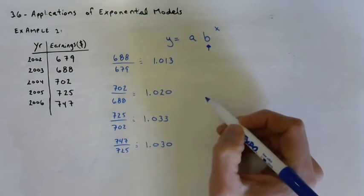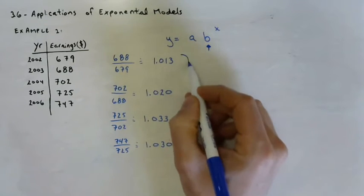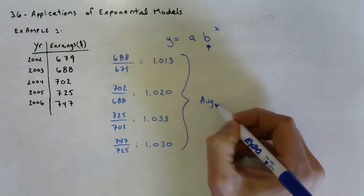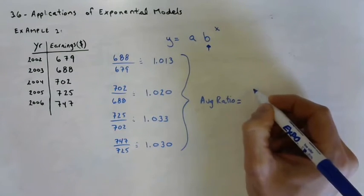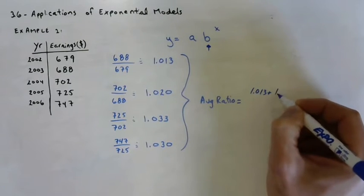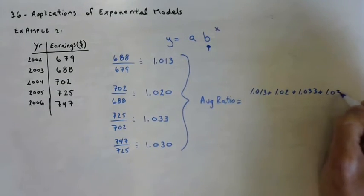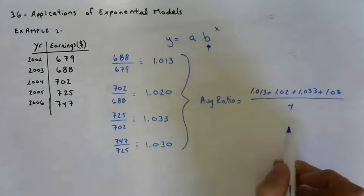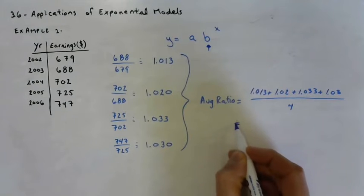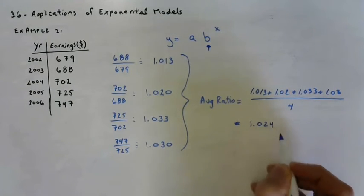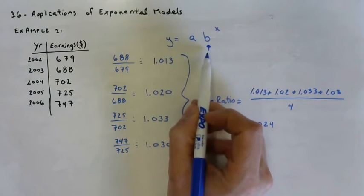So now we've taken four of the ratios, four successive ratios. They're really close to the same. They're all hovering in between 1.01 and 1.033. But in order to get really accurate, all we would really need to do is take an average of all of these. So the average of these, the average ratio says we're going to add them all up. So 1.013 plus 1.02 plus 1.033 plus 1.03. And we're going to divide them by the number of ratios used, which is four. It should have gotten 1.024.